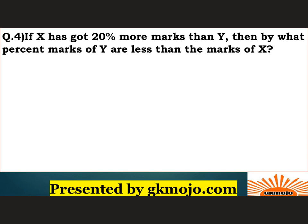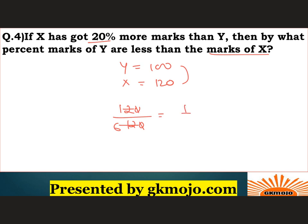If X has got 20 percent more marks than Y, then by what percent are marks of Y less than marks of X? Many students and educators use formulas for such questions, but you should always go by the concept — formulas will confuse you in the examination. X has got 20 percent more marks than Y, so let Y get 100 marks, then X gets 120 marks. Since we are comparing with X, the denominator is 120 and the difference is 20. So the percentage is 20 by 120 into 100, which is 16.66 percent.